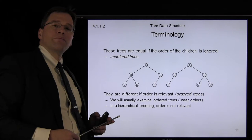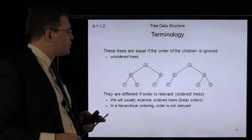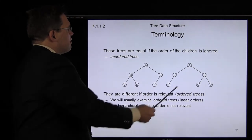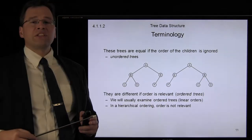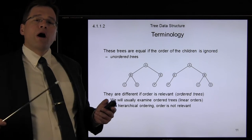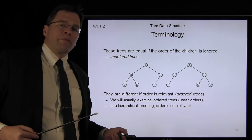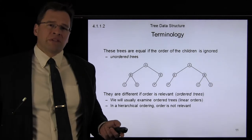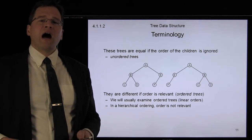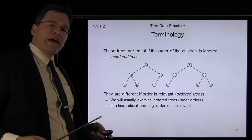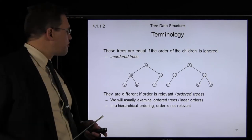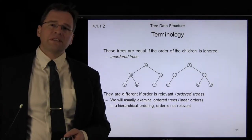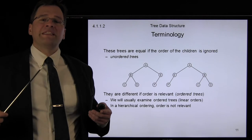Let's take a look at these two trees. Both have A as its root, but in this case the children are B and E. In this example, we have E and B as its children. Now, are these trees the same or not? If we consider these trees to be the same, we will say that we are dealing with unordered trees. On the other hand, if the order of the children is relevant, then we will say that we are dealing with ordered trees. In which case, these two trees will be said to be different.